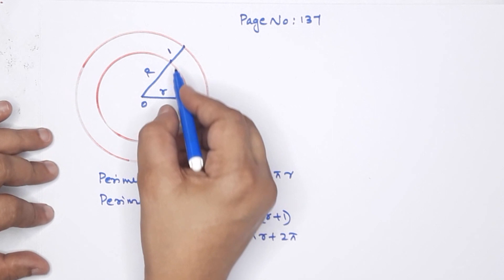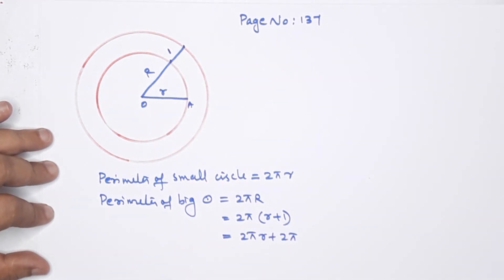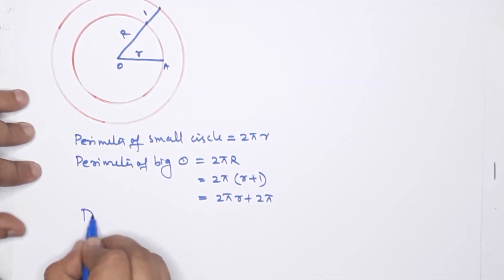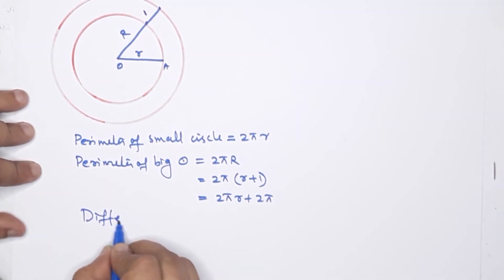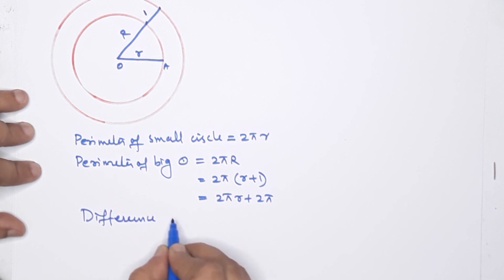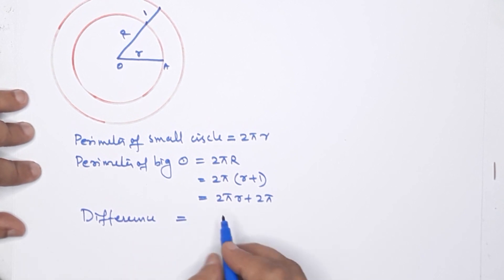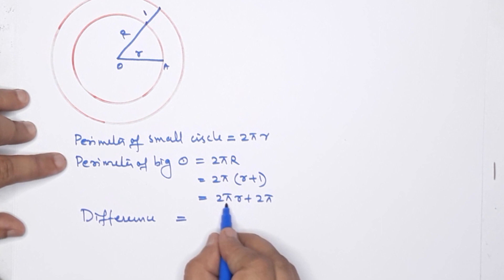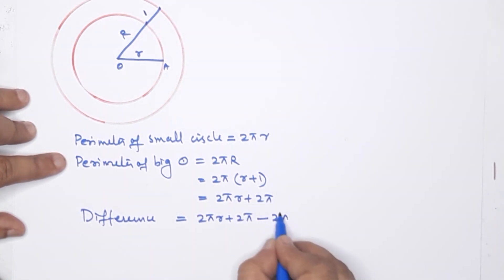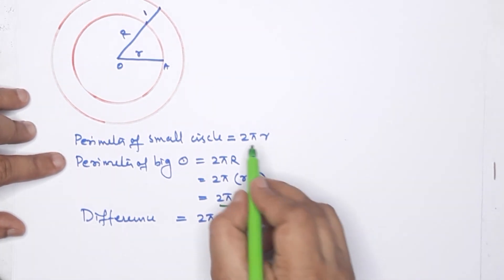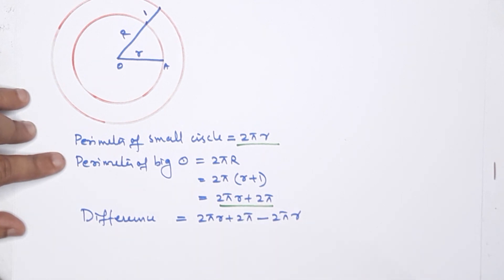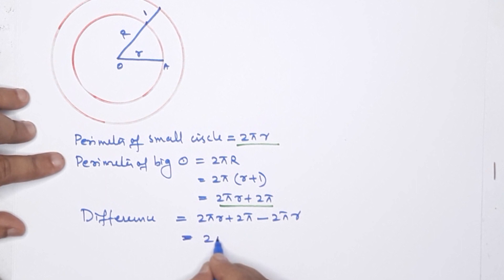Difference between the perimeters of these two circles: that equals the large circle perimeter subtract 2πr. If you cancel the 2πr terms, the answer is 2π. Is it clear?